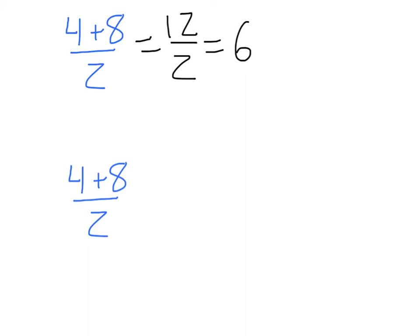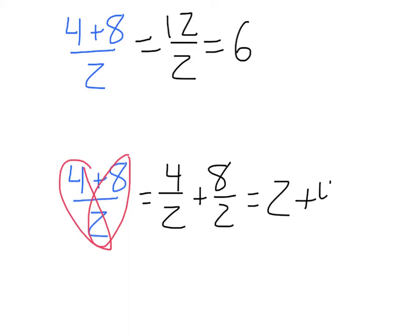However, we also could have split this into two separate terms. So we could take 4 over 2 and 8 over 2, which makes the shape of a heart, which is why we call this the heart method. So we have 4 over 2 combined with 8 over 2, which of course is 2 plus 4, which equals 6. We're only able to do this heart method if we are combining on top and dividing by a single term.